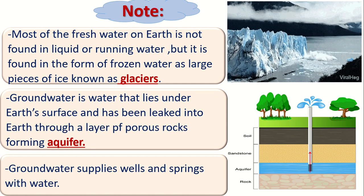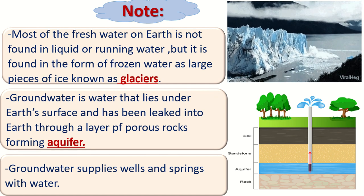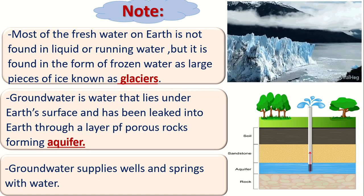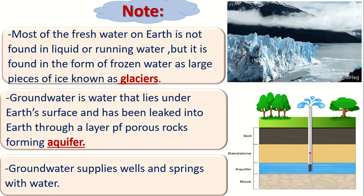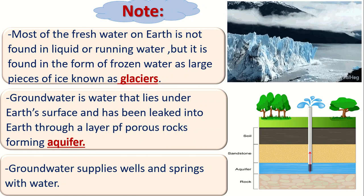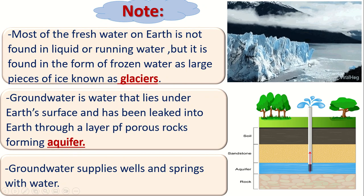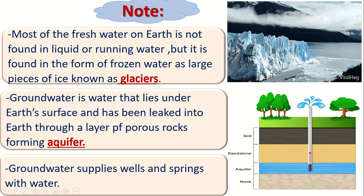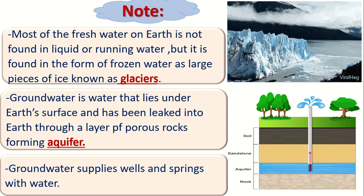Most of the 3% fresh water is not liquid — it is frozen water. We can find it in large pieces of ice or snow called glaciers. As you can see in this picture, glaciers are large sheets of ice or snow moving slowly over the Earth's surface.